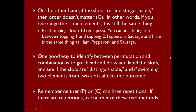One good way to identify whether it's permutation or combination is to draw and label the slots, then see if the slots are distinguishable. You can also try switching two elements between two slots to see if it affects the outcome. Remember, neither permutation nor combination can have repetitions — if there are repetitions, you cannot use either method and must use something else.